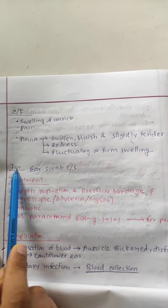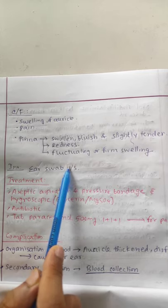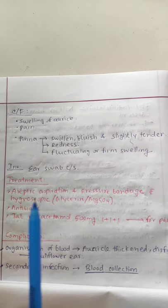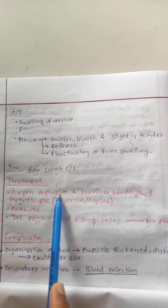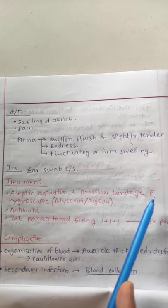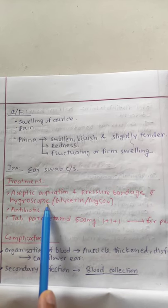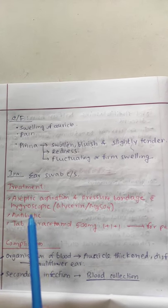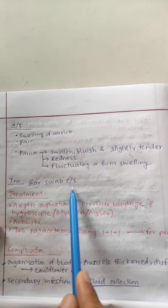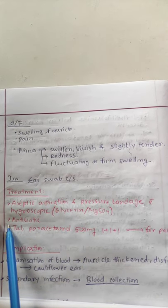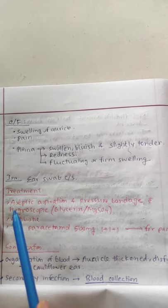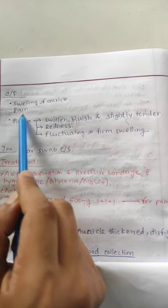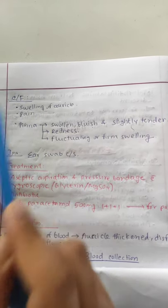Investigation includes an ear swab for culture and sensitivity. Treatment: number one, aseptic aspiration and pressure bandage; number two, antibiotics after culture sensitivity; number three, tablet paracetamol for pain.